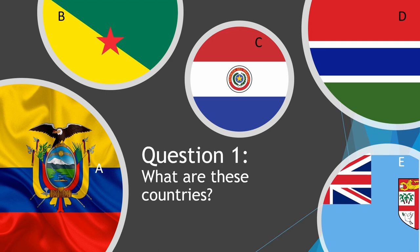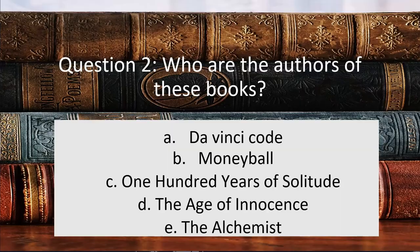Moving on to question number two: who are the authors of these books? We have Da Vinci Code, Moneyball, 100 Years of Solitude, The Age of Innocence, and The Alchemist.